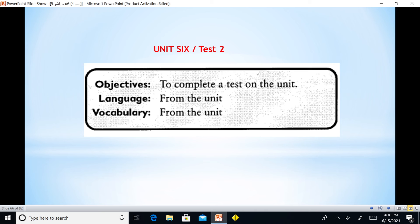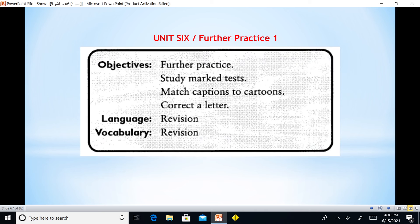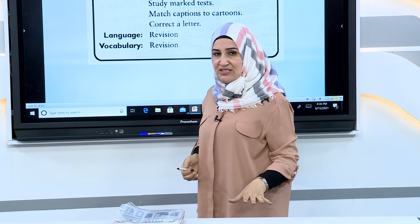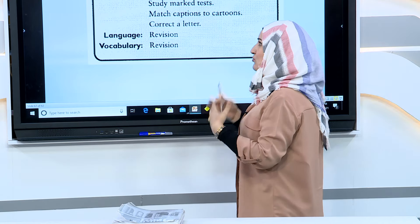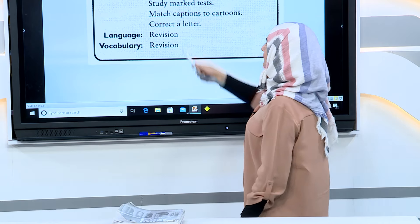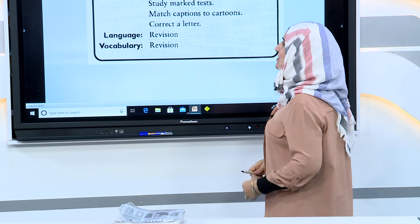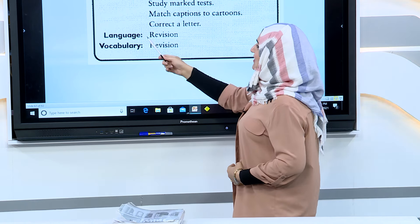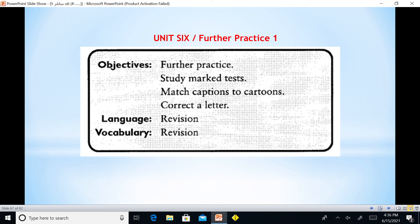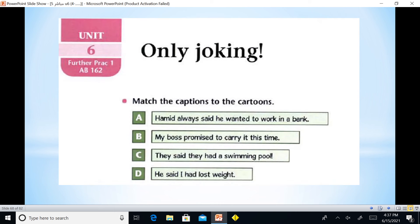All of this is from the unit — the vocabulary and the language. Unit 6 Further Practice 1 — these are additional exercises number 1. Language and vocabulary revision. The activities include: study, mark, test, match captions to cartoons, and correct a letter.